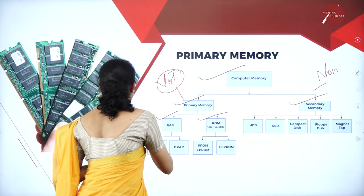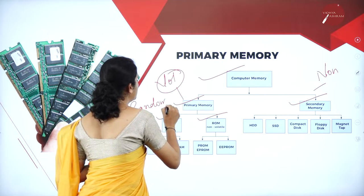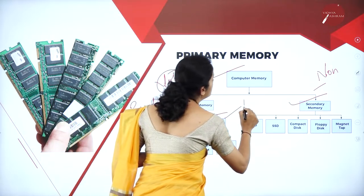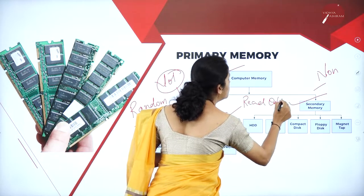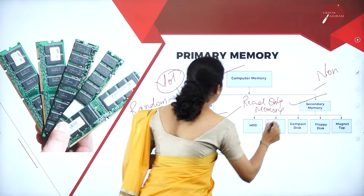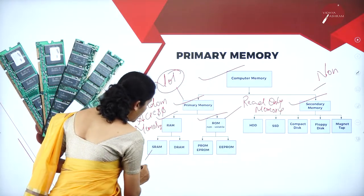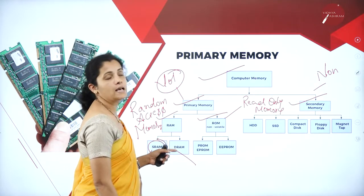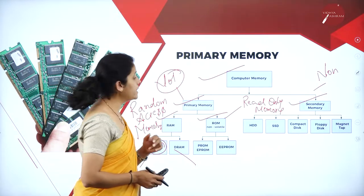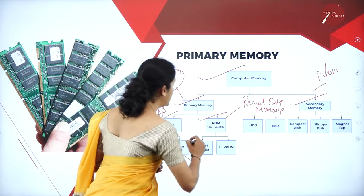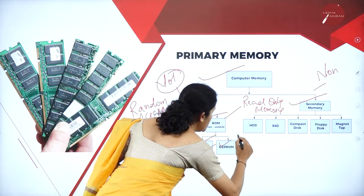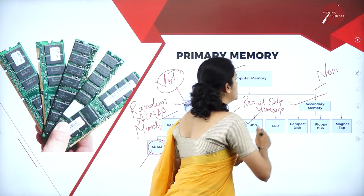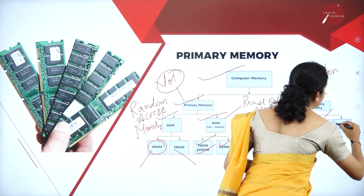RAM stands for random access memory, and ROM stands for read-only memory. RAM is further classified into SRAM and DRAM — S stands for static RAM and D stands for dynamic RAM. ROM is classified into three types: PROM, EPROM, and EEPROM. Secondary memory is classified into hard disk, secondary storage devices, compact disk, floppy disk, and magnetic tape.